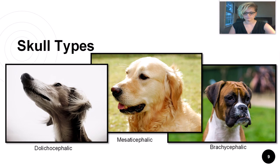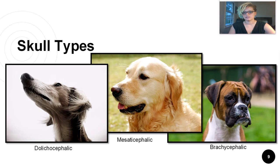Mesaticephalic animals have a moderate, rather square head type, like the Golden Retriever. These animals have a moderate visual field and are good at carrying things in their mouths — their jaws, shorter than a Saluki's but longer than a Boxer's, provide enough room to easily carry objects. You can imagine a Boxer might have more difficulty carrying a bird than a Golden Retriever. A Boxer is an example of a brachycephalic dog, which have very short faces.